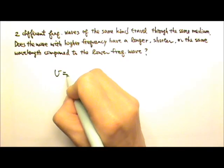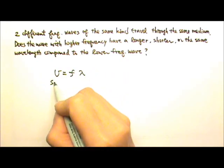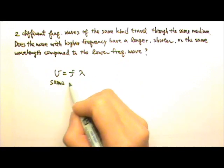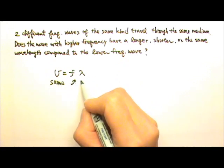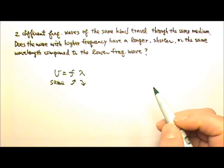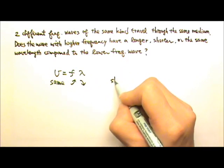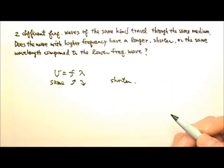Wave speed equals frequency times lambda. The two waves have the same speed. That means the one with a higher frequency must have a shorter wavelength. So it's the shorter. You will see that the wavelength is indeed shorter for the higher frequency wave in the St. Mary's demo.